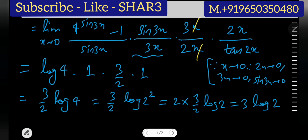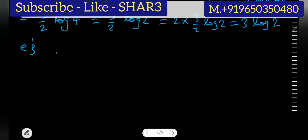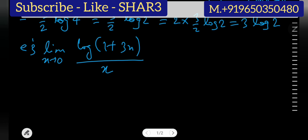Now we will take a few more problems on the second limit formula. Suppose we have: limit x approaches 0 of log(1 plus 3x) over x. If you put the value of the limit directly, the denominator is 0 and the numerator is log(1 plus 0) = log 1 = 0, so it is 0 by 0 form. We need to remove this indeterminate form by comparing with the logarithm formula.